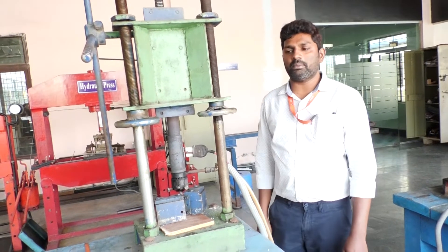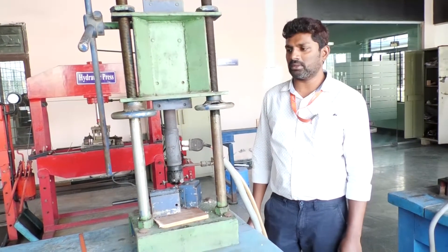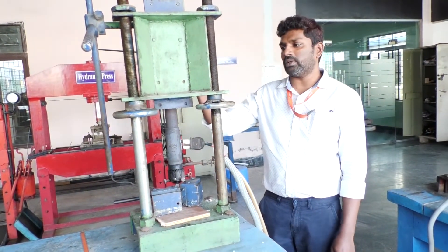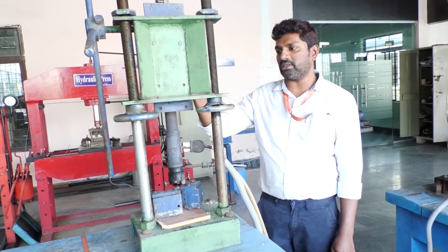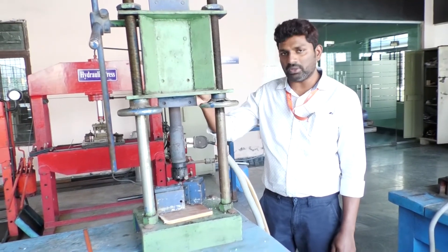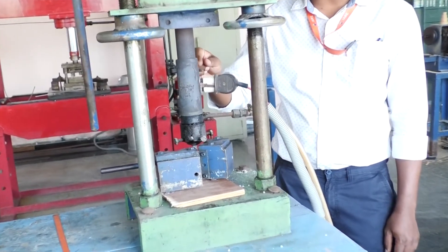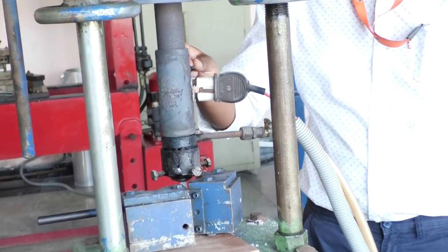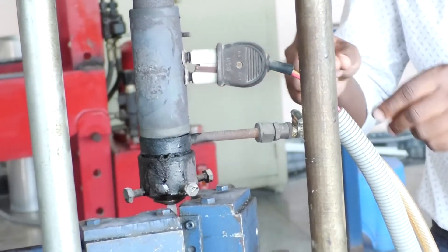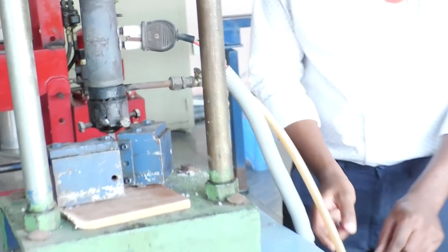This is a blow molding machine in which we will pour the high-density polyethylene granules into the heater. This heater is connected to the barrel, and this barrel is connected to the air compressor. This is the air compressor pipe.